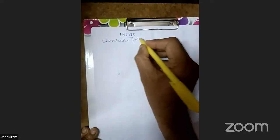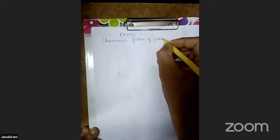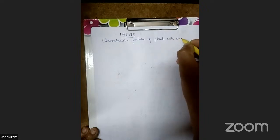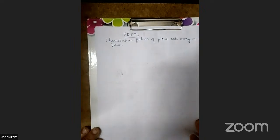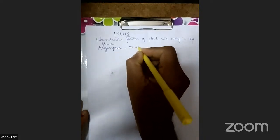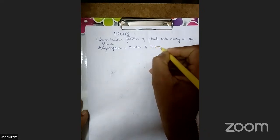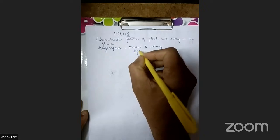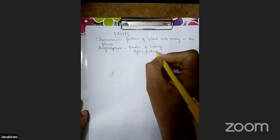Fruits are formed only in plants with an ovary in the flower. There are two types of flowering plants: gymnosperms and angiosperms. In gymnosperms, ovules are produced but the ovary is not present in the flower, whereas in angiosperms both ovules and ovary are present.